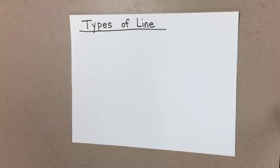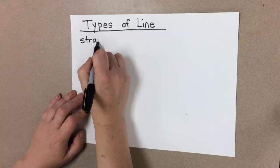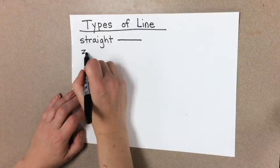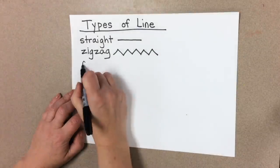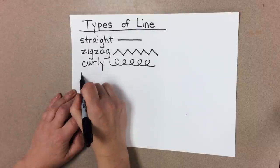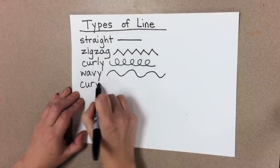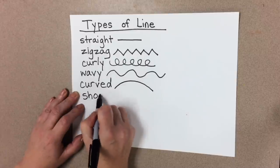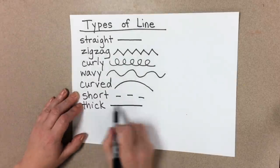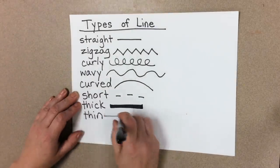In art, we have different types of line that we can use. Straight, zigzag, curly, wavy, curved, short, thick, thin.